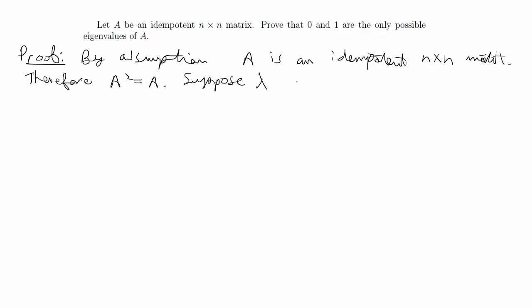Now, suppose lambda is an eigenvalue of A, which we know the matrix A is going to have. It's asking us to prove that the eigenvalues are 0 or 1. Then, there exists a non-zero vector V such that AV equals lambda V.